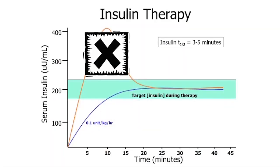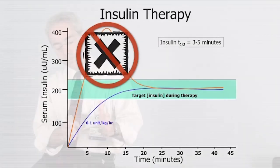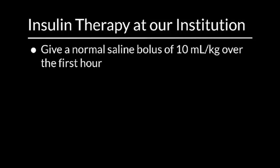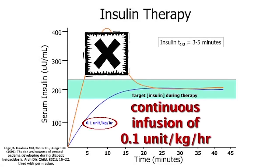We certainly don't give any boluses at this point. Based on all this data, we proceed by giving our normal saline bolus — usually 10 mLs per kilo over the first hour. At the end of that first hour, we start the insulin infusion without a bolus and without a loading dose. We give it at 0.1 units per kilogram per hour as a continuous infusion.